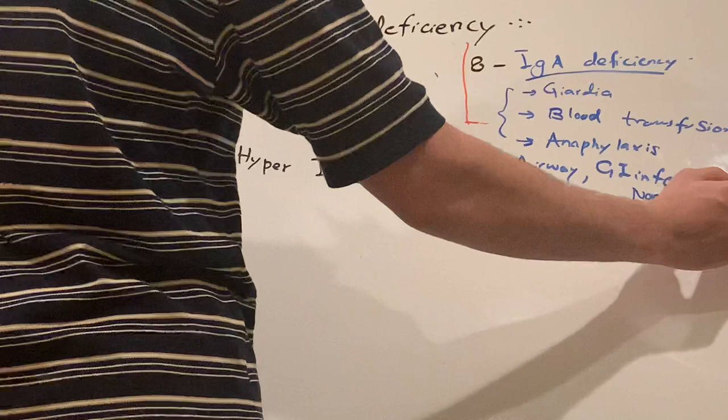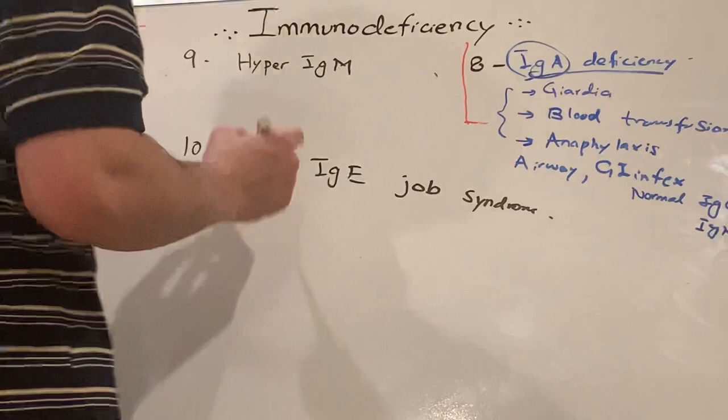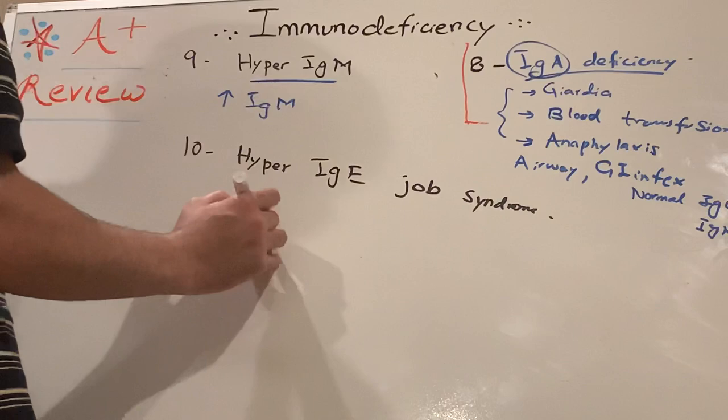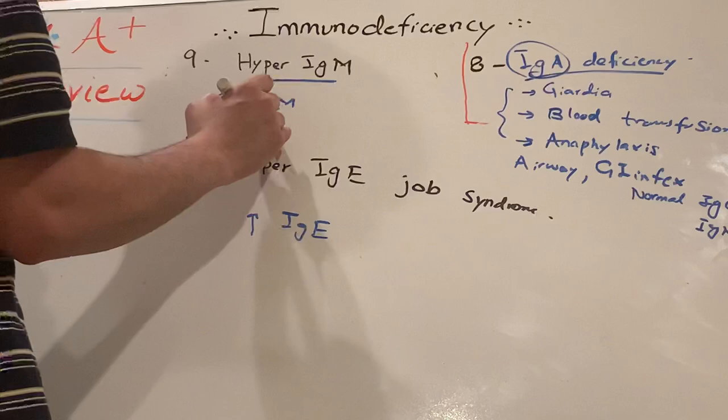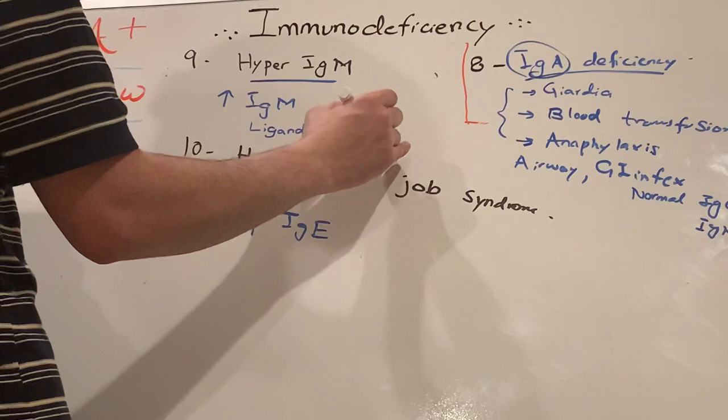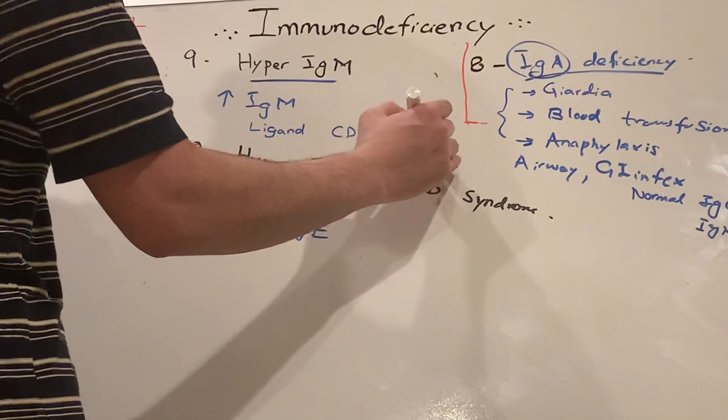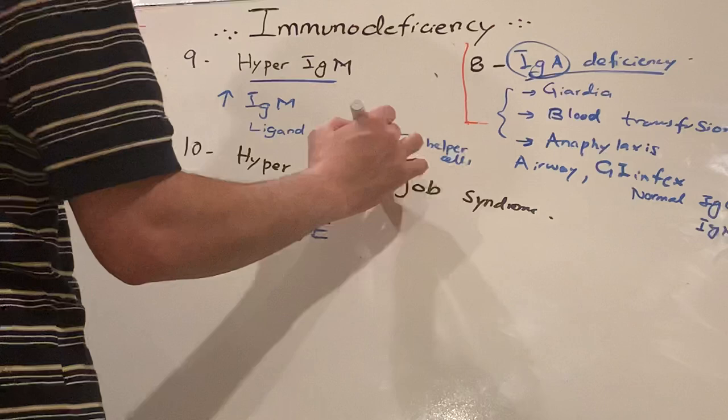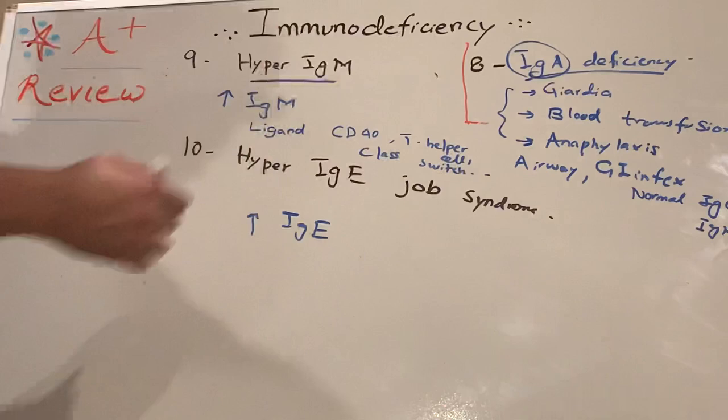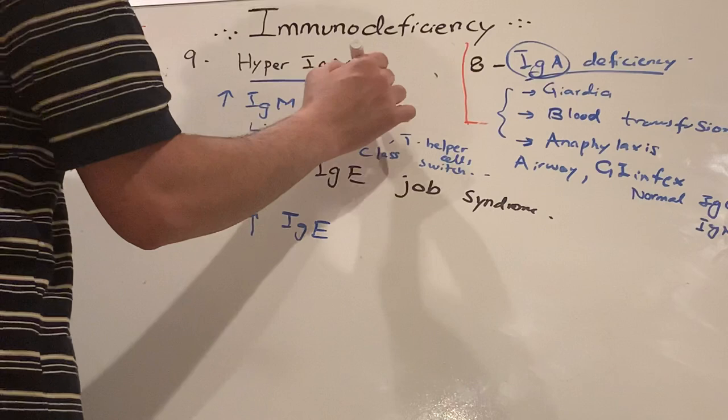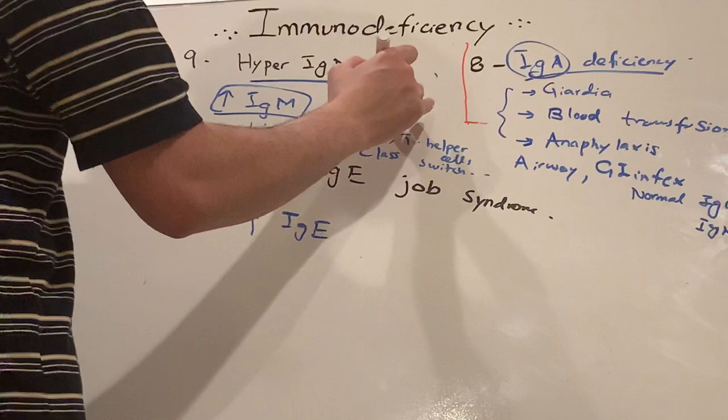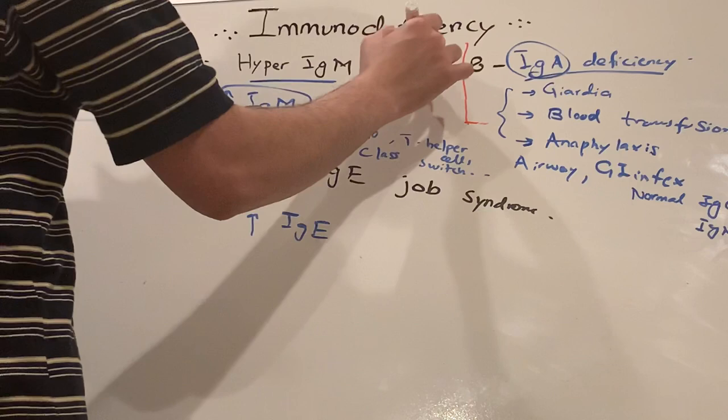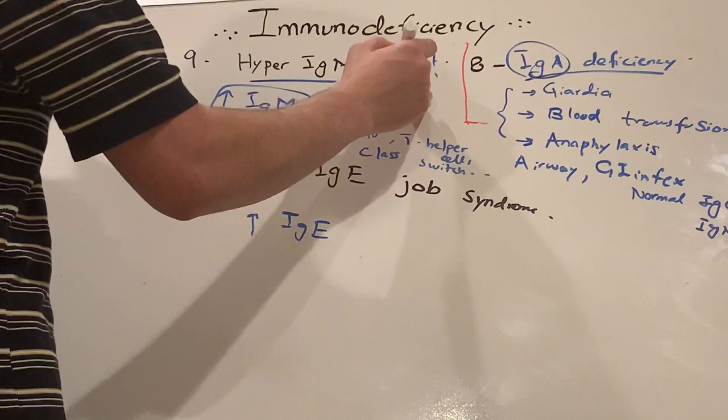Now Hyper IgM. What's happening in Hyper IgM? There's a CD40 ligand defect on the T helper cells. It's like a class switching defect. Class switching. And then you'll have Hyper IgM and all others severely decreased. In the question they will describe opportunistic infections like Pneumocystis, Cryptosporidium, CMV - those are good clues. Pneumocystis, opportunistic infections, CMV, exactly.